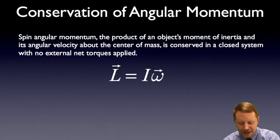So how about this conservation of angular momentum? Spin angular momentum, the product of an object's moment of inertia and its angular velocity about the center of mass, is conserved in a closed system with no external net torques applied. So as long as there are no external net torques, that spin angular momentum has to remain the same for that closed system. That's pretty profound, kind of like the conservation of linear momentum. In a closed system, linear momentum is also conserved.